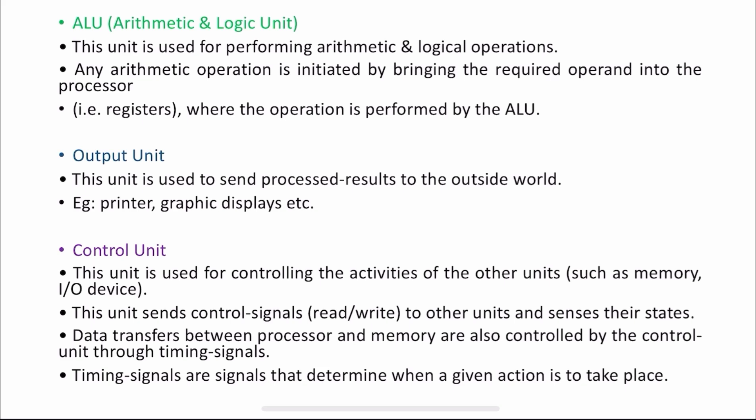The fourth one is the output unit. First you get the input, next you store the details, next you process it, and then you need to display your output. For that purpose you use the output unit. The best example for the output unit is a monitor, because whatever result is produced after processing will be displayed on the monitor. Output unit is the unit used to send processed results to the outside world. Examples include your monitor and also a printer, which is also one of the output devices.